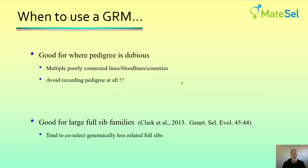Using a GRM is good for when your pedigree is dubious — you may have missing information, or poorly connected lines, bloodlines, or countries with some admixture quite recently. Under that circumstance, genomic information is more useful. You may also want to avoid recording pedigree altogether — some MateCell users have moved in that direction. The GRM might also be useful where you've got large full-sib families, for example after using multiple ovulation and embryo transfer, because you will tend to co-select genomically less related full sibs.